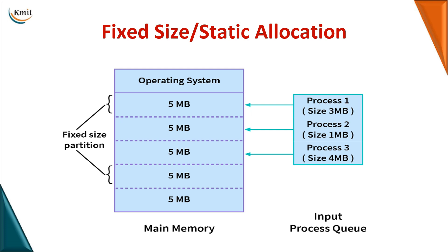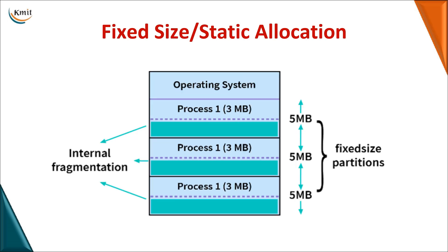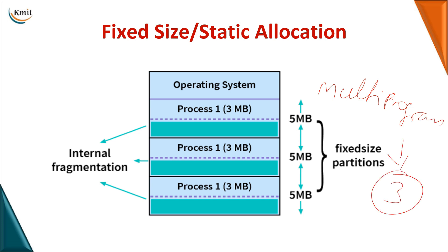In fixed-size or static allocation, the user space is divided into equal-sized blocks — block one, block two, block three, and so on. Each process is placed into an available empty block. The degree of multi-programming is directly determined by the number of partitions — if there are three partitions, three programs can execute simultaneously.